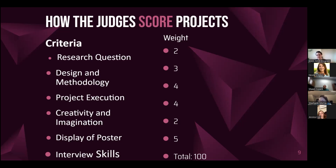Our second criteria is design and methodology, with a weight of three. Project execution and creativity and imagination both have weights of four. The display of the poster has a weight of two. And then their interview skills have a weight of five — the highest scored criteria. Tied in second place are project execution and creativity and imagination. I want to give you an idea of how everything stacks up together.